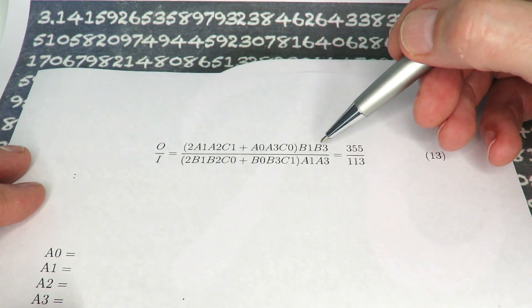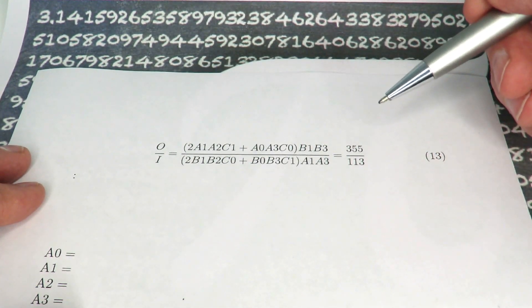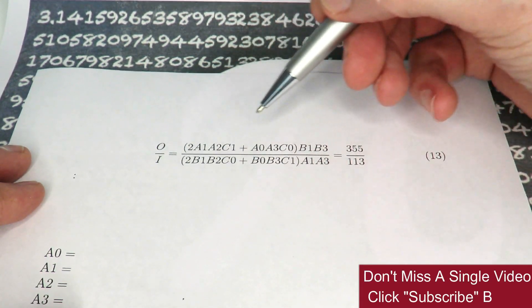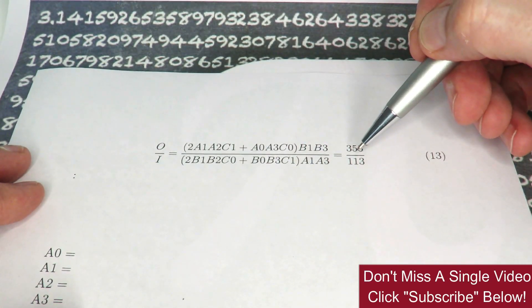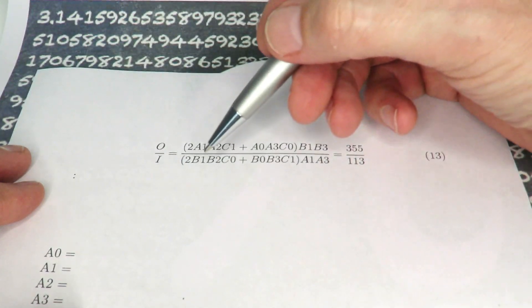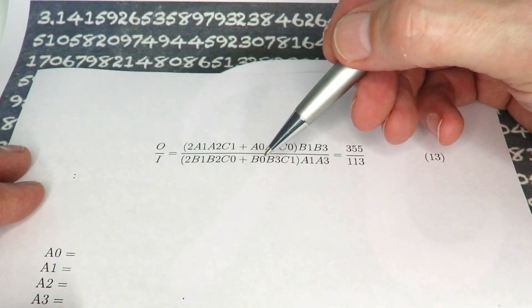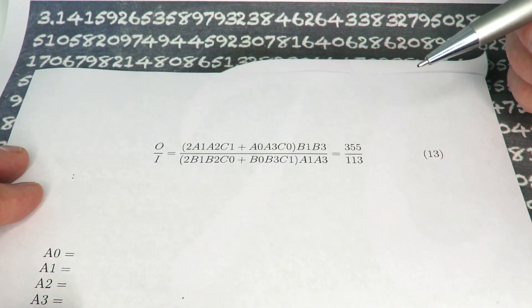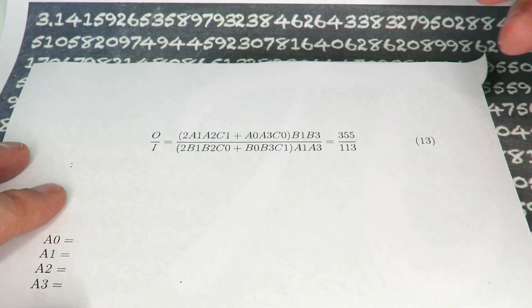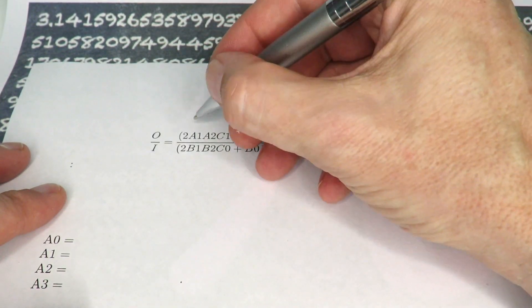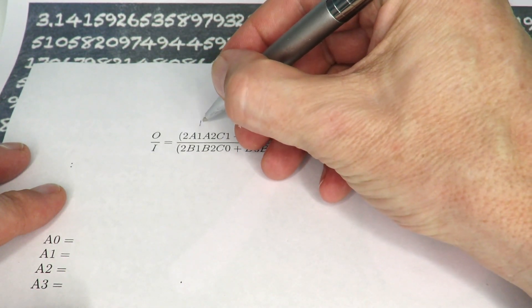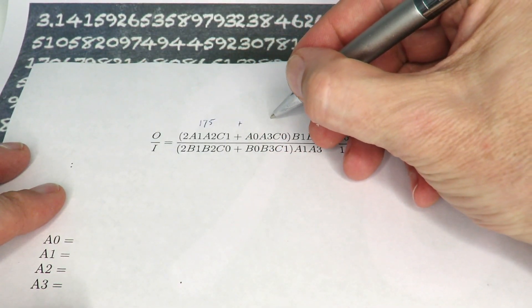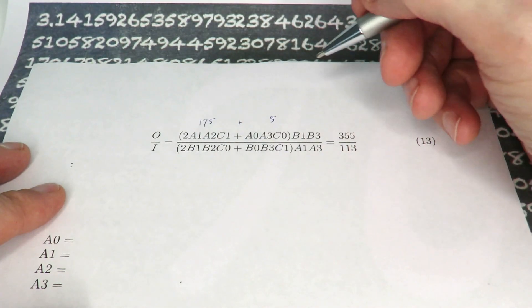So when we look at this part, it turns out in the math that b1, b3, a1, a3 always cancel—they're equal to one, which means that what we need is a value of two times something plus something else equals 355. And the same for the denominator: we need two times something plus something else equals 113. There are many solutions to these equations.